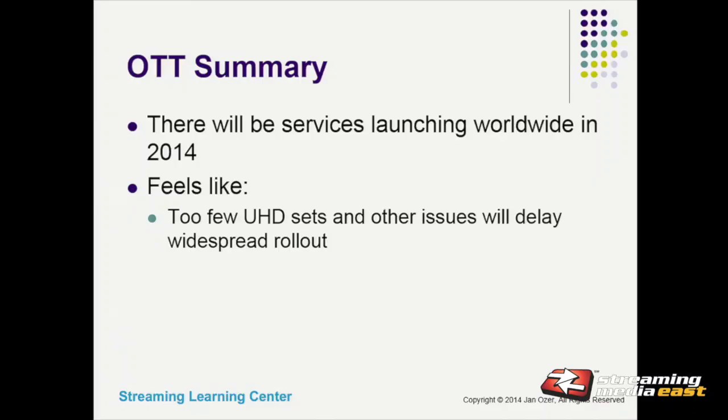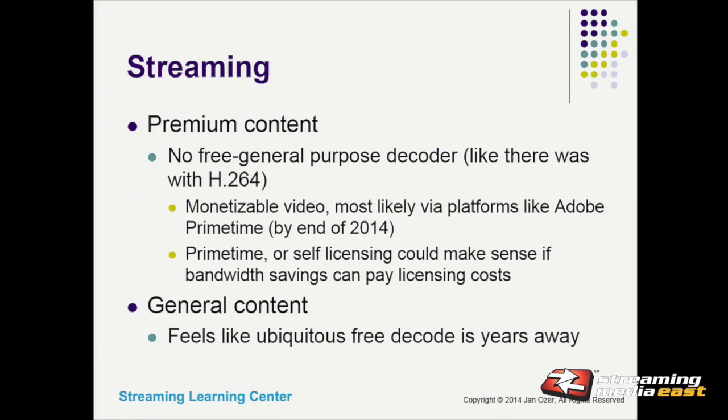It's going to be interesting to see how this plays out. Netflix is saying, why should we have to pay you? Jan Ozer spends $80 a month for 25 Mbps download — just deliver the 15 Mbps to him. The cable companies say they're spending too much upgrading infrastructure just for Netflix content. Summary on OTT: there are services launching worldwide in 2014, but there are too few sets out there and too many other issues for this to be significantly impactful in the short term. That's my high-level analysis of that space.